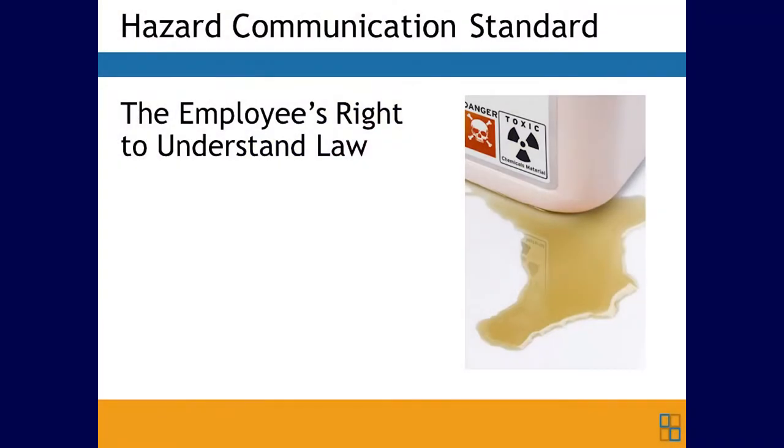The new labels alert people to potential hazards and provide important details on how to handle chemicals safely. The language must be clear and easy to understand, and the pictograms or images are now standardized. The new system spells out potential hazards and protections in terms that everyone worldwide can understand. Every hazardous chemical carries a uniform label with information that's easier to understand, with clearer warnings and more obvious necessary actions.